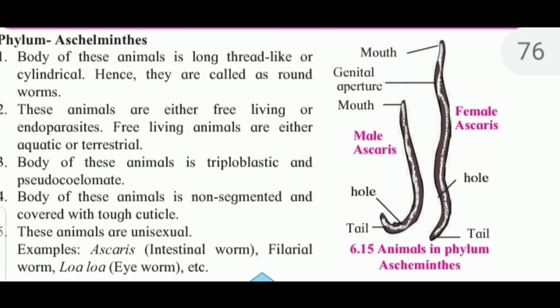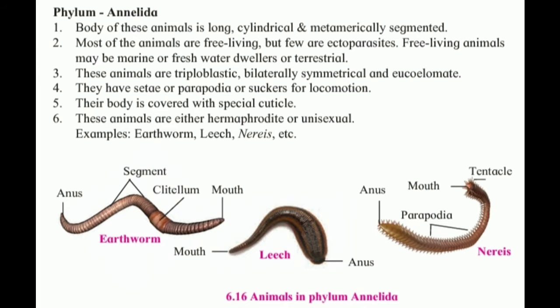The body of these animals is triploblastic and pseudocoelom is present. The body of these animals is non-segmented and covered with a tough cuticle. These animals are unisexual. Examples include Ascaris, filarial worm, etc.